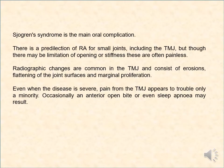Sjögren's syndrome is a main oral complication. There is predilection of rheumatoid arthritis for small joints, including the temporomandibular joint, so there may be limitation of opening or symptoms that are often asymptomatic. The radiographic changes consist of erosion, flattening of the joint surface, and marginal proliferation. Even when the disease is severe, the temporomandibular joint appears to cause serious trouble only occasionally, and anterior open bite or even ankylosis may sometimes result.